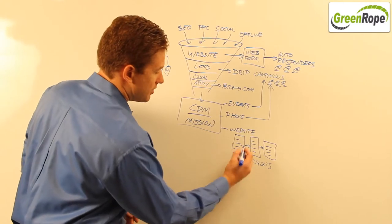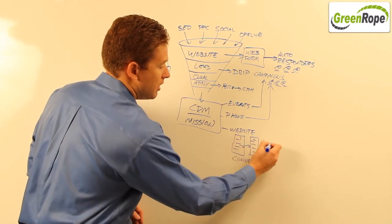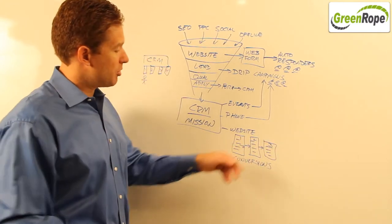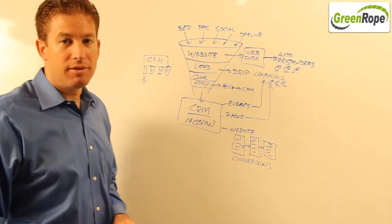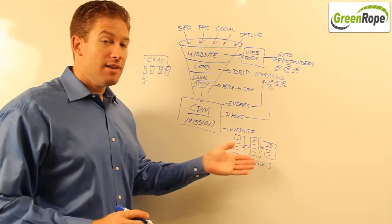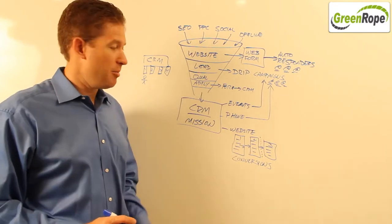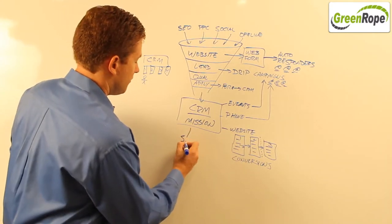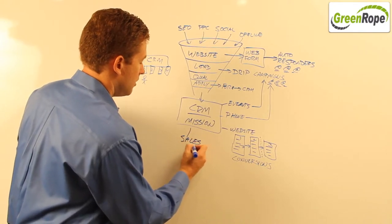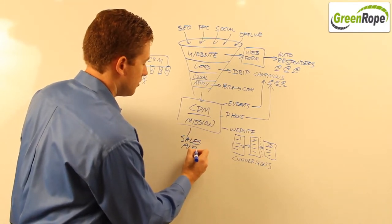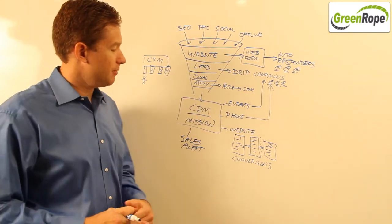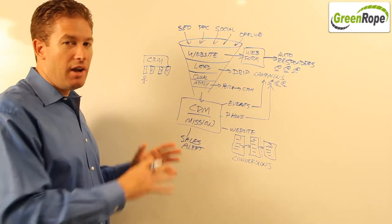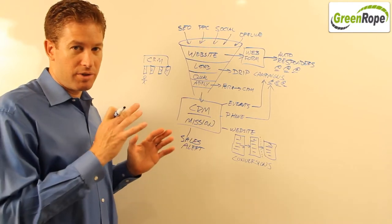So maybe you have this as a stage one, stage two, and stage three, and somewhere between stage two, you might have someone dropping off. We can automatically see that this is happening and send them a follow-up email. We can also do sales alerts. So a sales alert allows us to let you know when a prospect is visiting your website. All of these tools are built in to the GreenRope system.